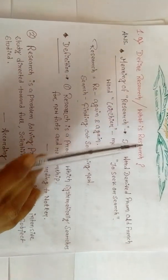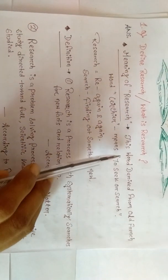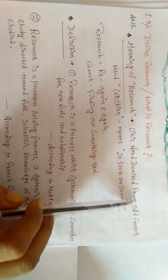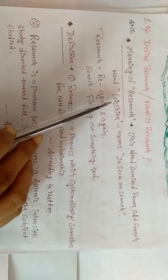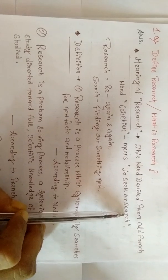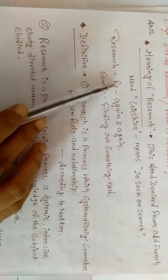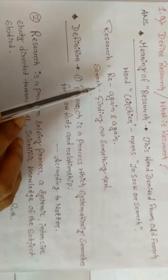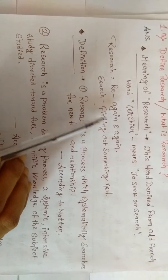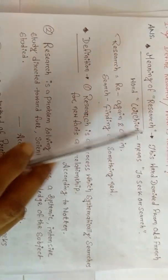If they ask this question, write the answer in this pattern. First, add what is the meaning of research. This word 'research' is derived from the old French word 'chercher', meaning to seek or search. Research is a combination of two words: 're' and 'search'. 'Re' means again and again, repetition, and 'search' means finding out something new. So research means again and again finding out something new.